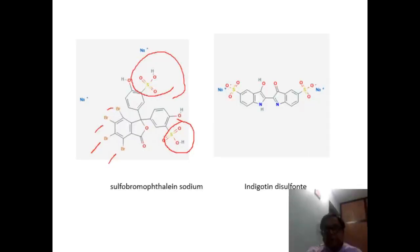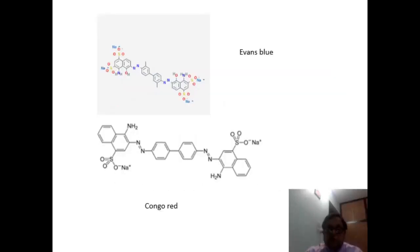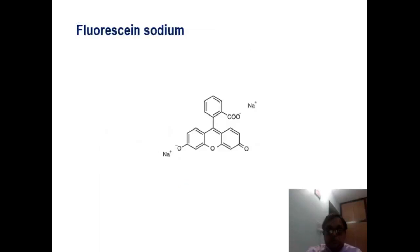If we see indigotine disulfonate, it can be easily divided into two parts and it contains the indole nucleus. You can see here also the indole nucleus and two sulfonic acid groups. Similarly, Evans blue is also in two parts. Fluorescein sodium is an anthracene-type molecule.